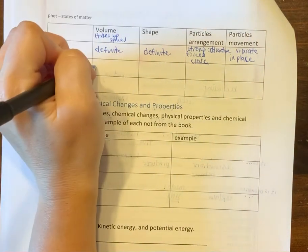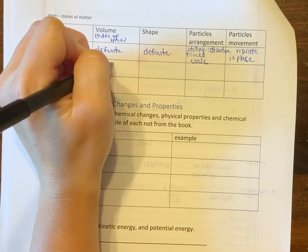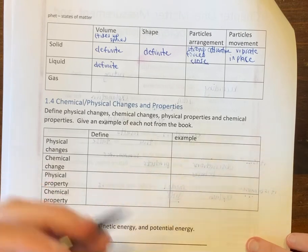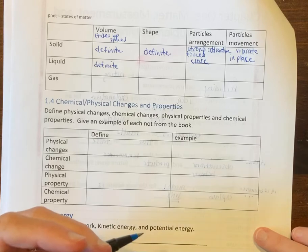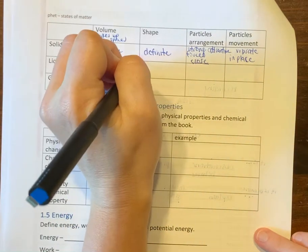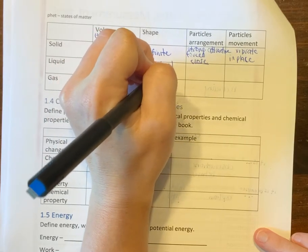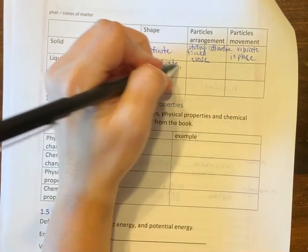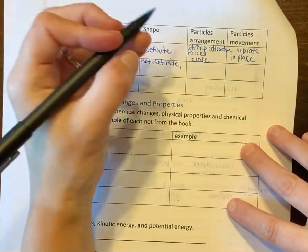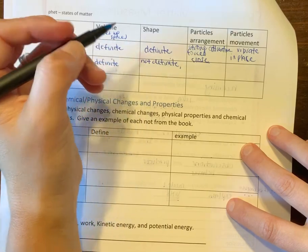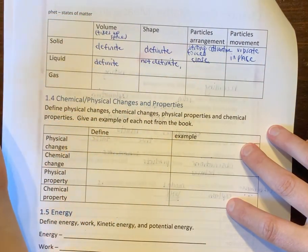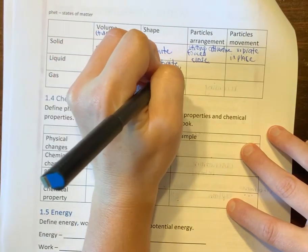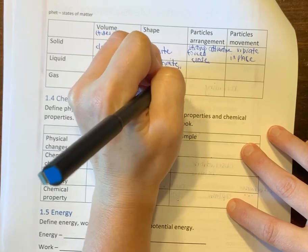Now a liquid definitely has a volume, so it's a definite volume. We can measure a liquid, and you'll do that in lab. Now, does a liquid have a shape? It's kind of weird, right? Liquids, it's not definite. You can't just look at a liquid and go, oh, it's a cube. But if I told you you had a cup of water versus a pan of water, those are going to be different shapes, right? But it's still water. So what happens with liquids is it's going to take the shape of its container.